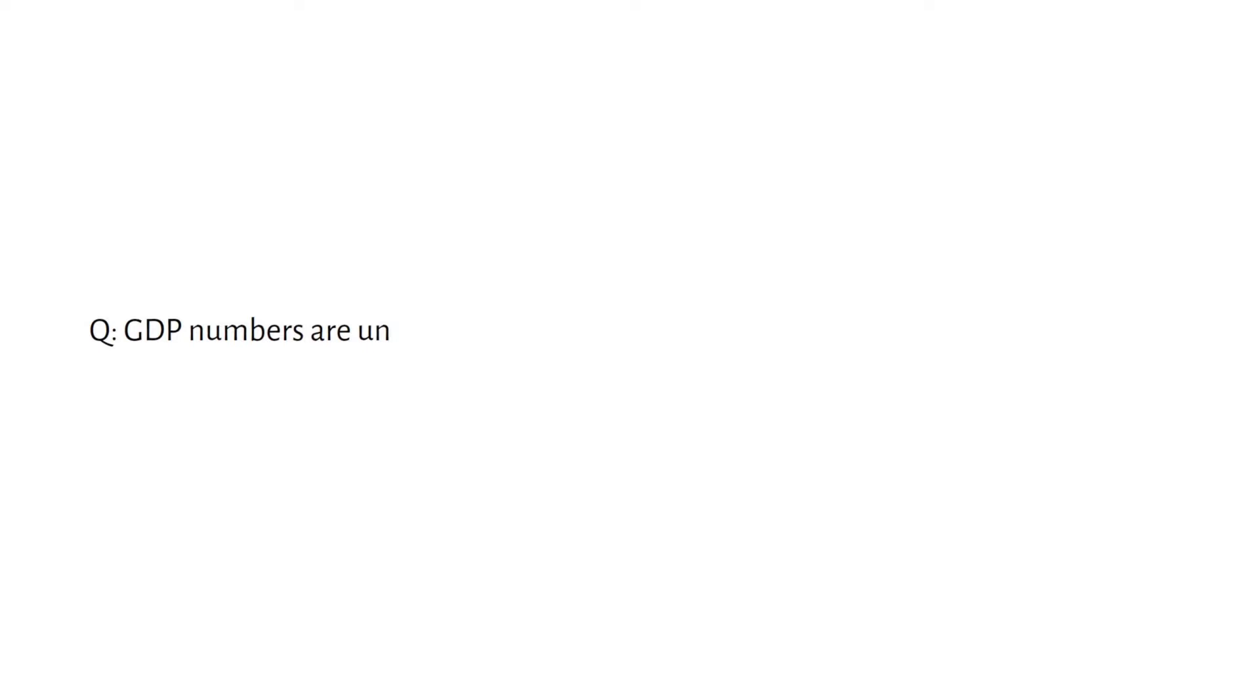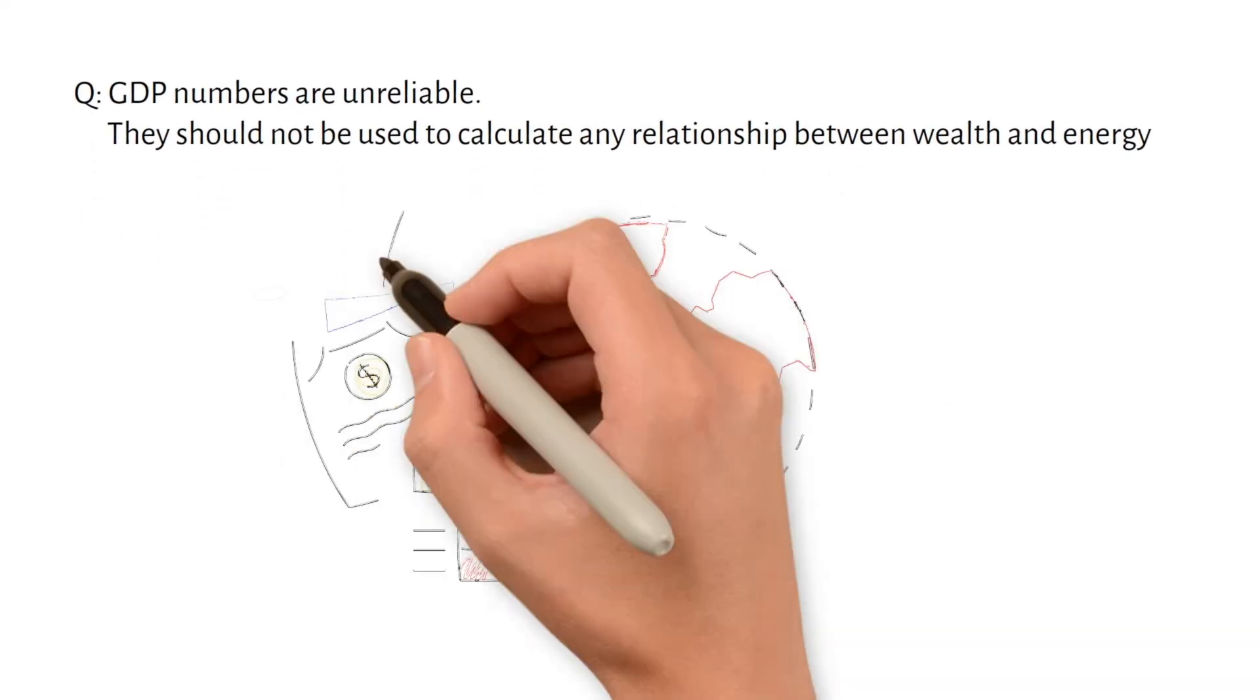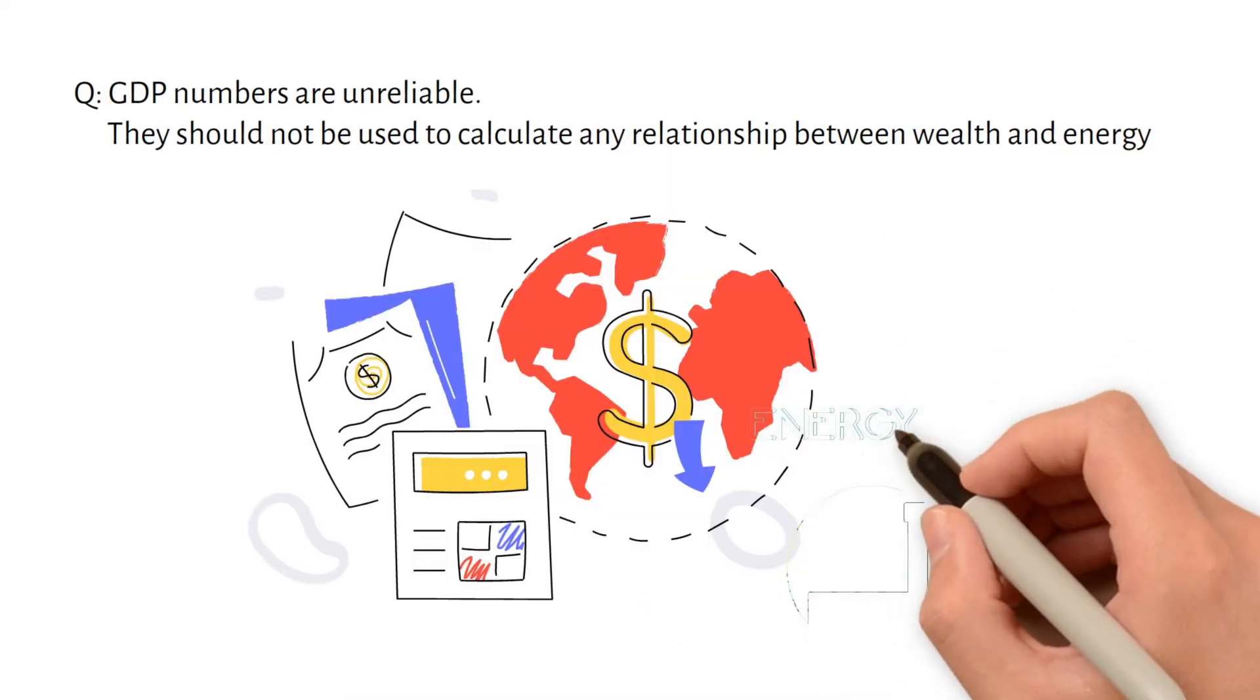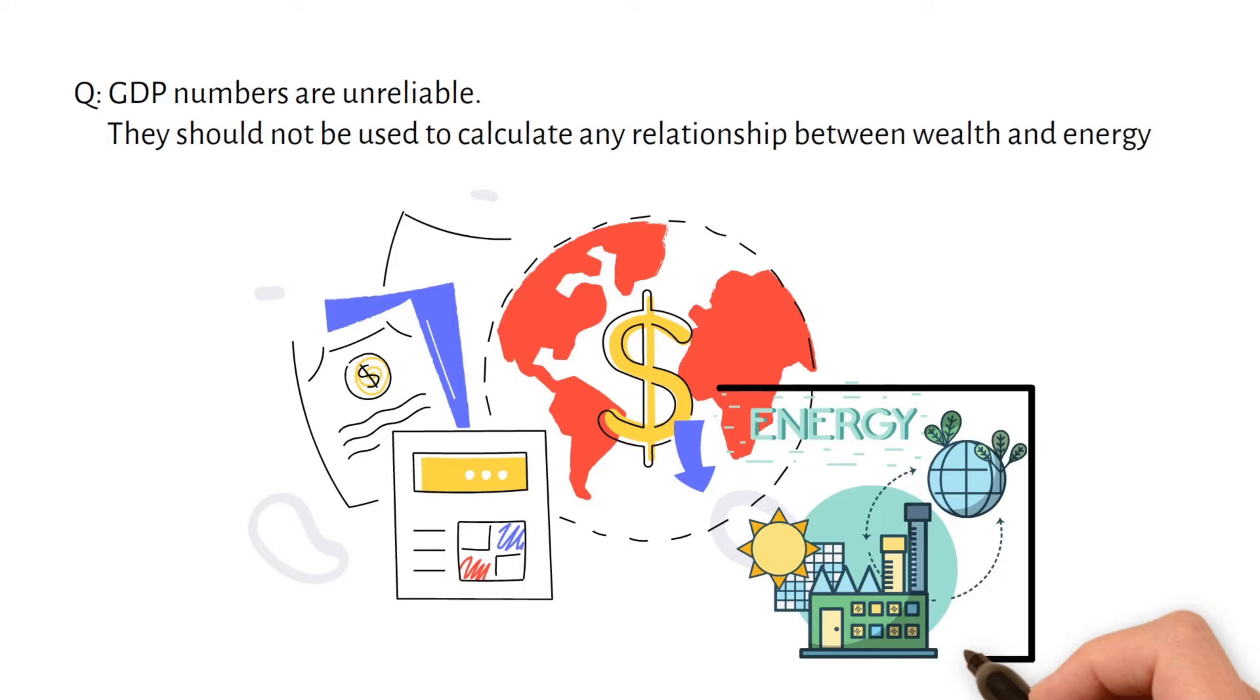GDP numbers are unreliable. They should not be used to calculate any relationship between wealth and energy. While GDP numbers have their limitations, they still provide valuable insights into the relationship between economic activity and consumption of energy and raw materials.